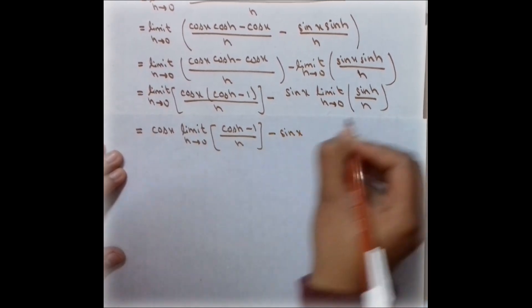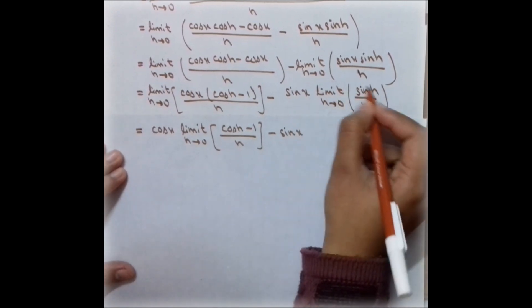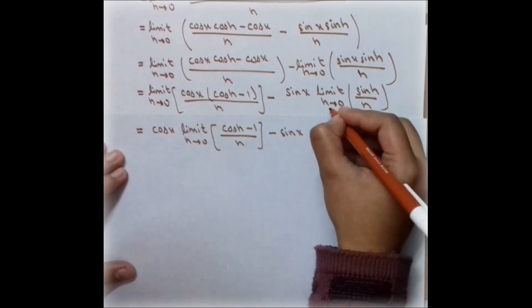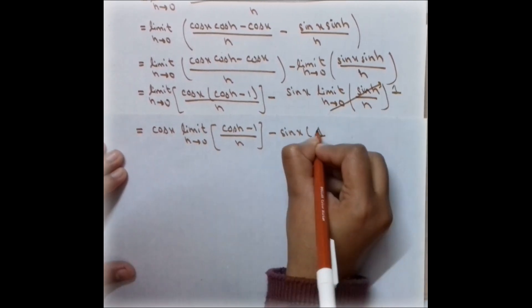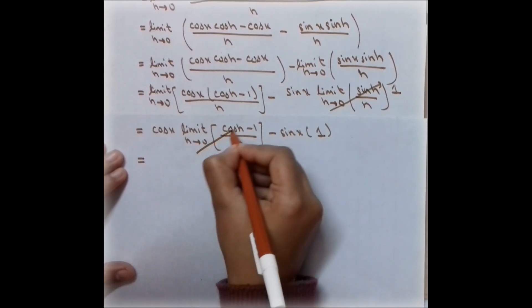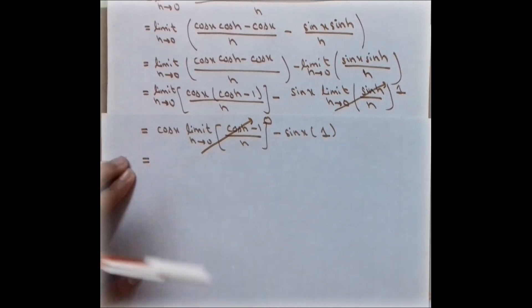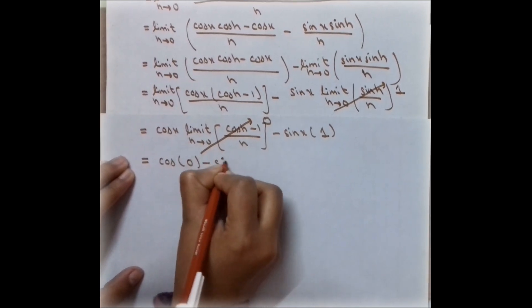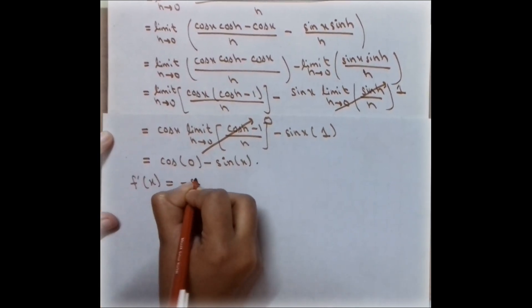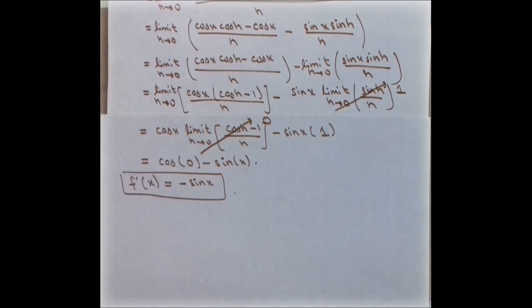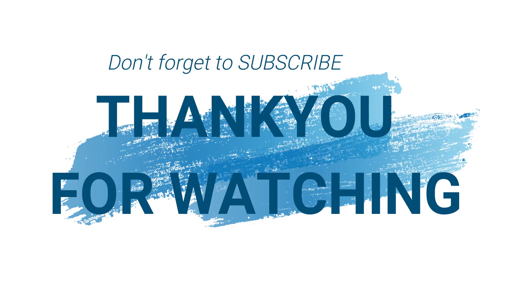Applying the sandwich theorem: the limit of sin(h)/h as h approaches zero equals 1, and the limit of [cos(h) minus 1]/h equals 0. So cos(x) times 0 gives 0, and minus sin(x) times 1 gives minus sin(x). The final answer is minus sin(x). This completes the detailed proof by the first principle method.